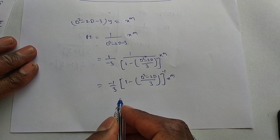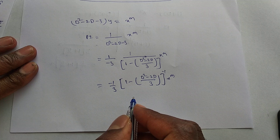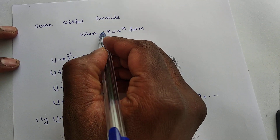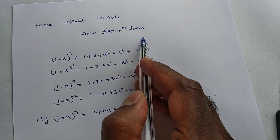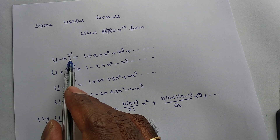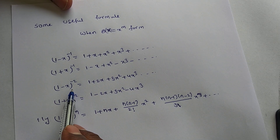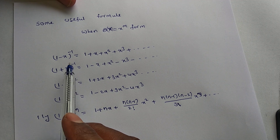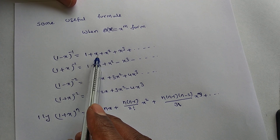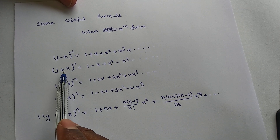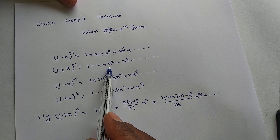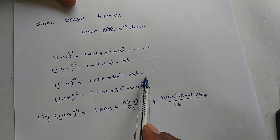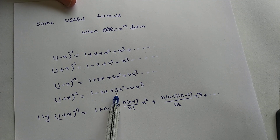Once in the form [1 ± φ(D)]^(-1) · x^n, apply the binomial expansion. Some useful formulas: (1-x)^(-1) = 1 + x + x² + x³ + ...; (1+x)^(-1) = 1 - x + x² - x³ + ...; (1-x)^(-2) = 1 + 2x + 3x² + 4x³ + ...; (1+x)^(-2) = 1 - 2x + 3x² - 4x³ + ...